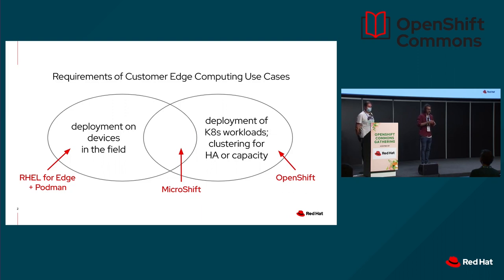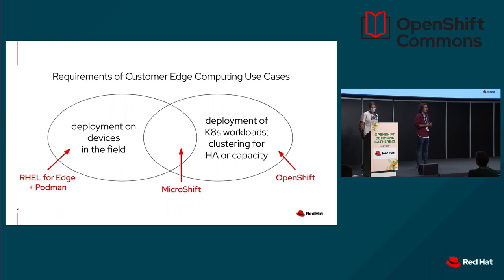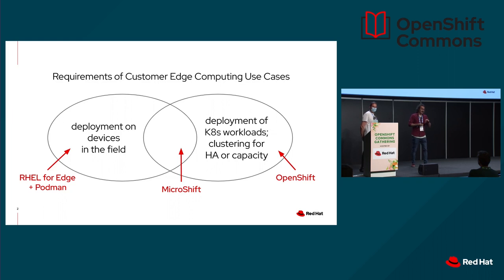If you look at Red Hat's portfolio, on one side of the spectrum we have OpenShift, which is Red Hat's Kubernetes distribution on steroids, let's say. It's well designed for data centers and for the cloud. Red Hat has been doing a huge effort to accommodate OpenShift to different topologies and architectures — distributed worker nodes, three-node clusters, and more recently, single node OpenShift.